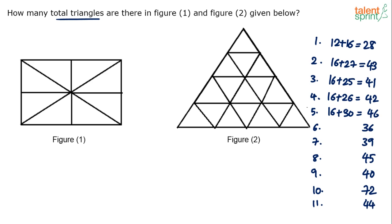We have at least 10 to 12 options now. Someone's got 29 and also 37. So maybe the correct answer is none of these — that can be taken as a 13th option. But let's go and count it up. These are the answer options we have.